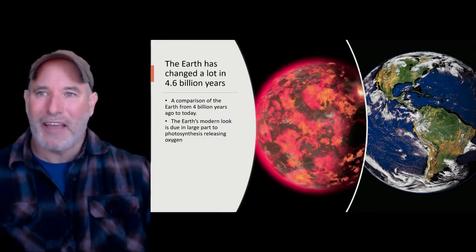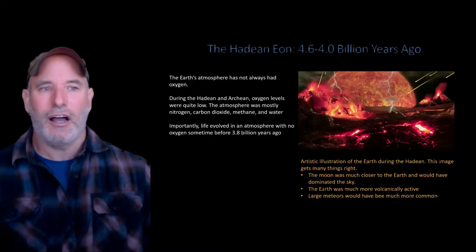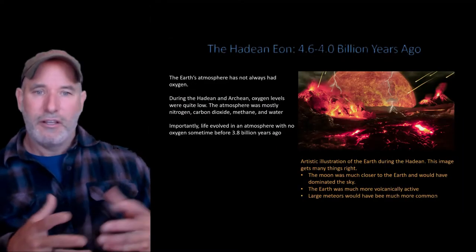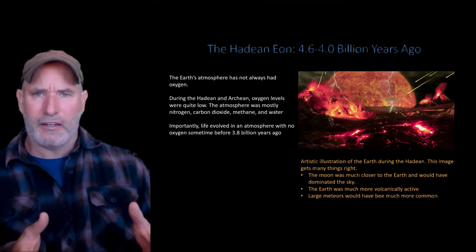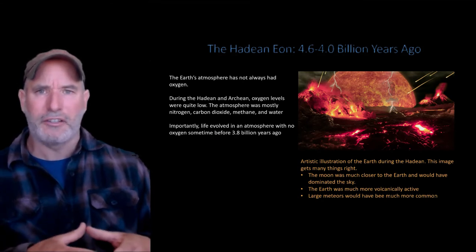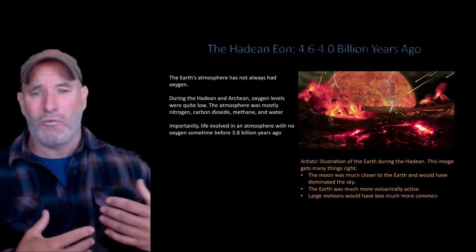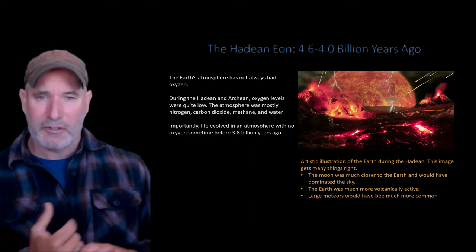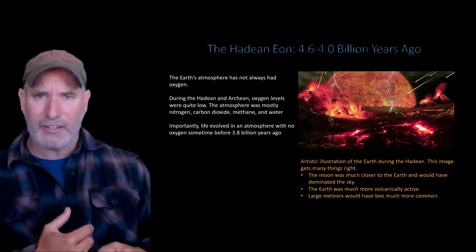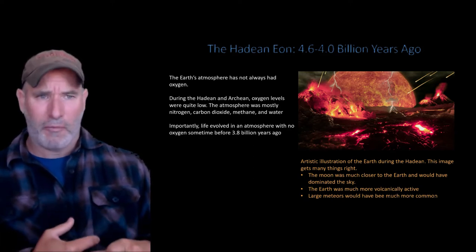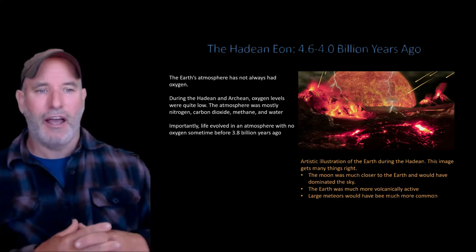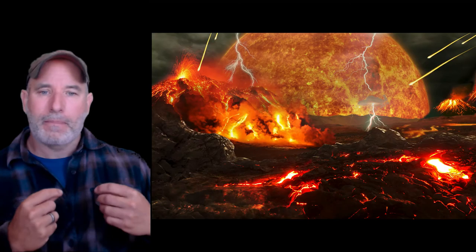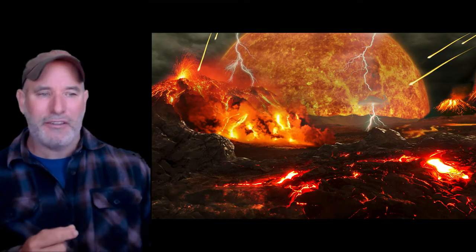The modern look of Earth is because of photosynthesis releasing oxygen into the atmosphere. Every mineral that forms on the surface has to react with oxygen. The Earth's atmosphere hasn't always had it. During the Hadean, when the Earth formed 4.6 billion years ago, the atmosphere was probably full of methane, nitrogen, carbon dioxide, water vapor, maybe some ammonia.